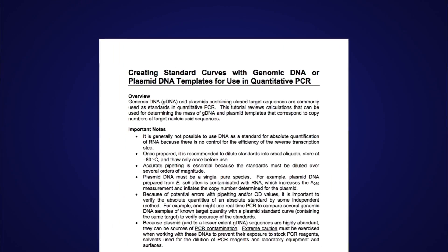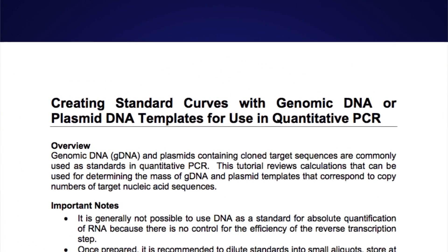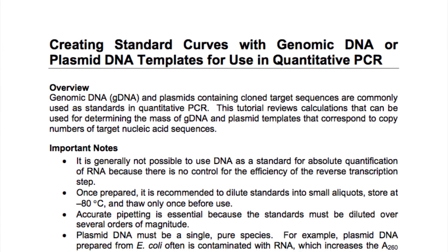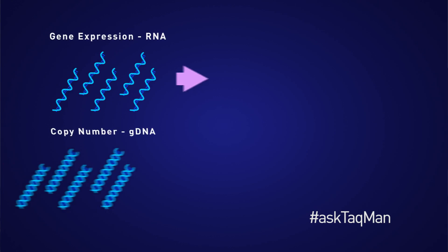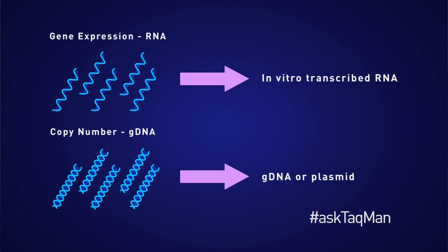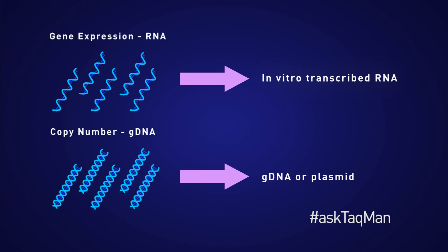You can also refer to our handy guide called Creating Standard Curves for more details on how to do this. Second, the standard should closely resemble the target from a biological standpoint, and it is very important that the DNA or RNA be a single pure species. For example, when measuring gene expression of RNA transcripts, you would want to use in vitro transcribed RNA. Take care here because purity will be an important factor in the accuracy of your measurement.